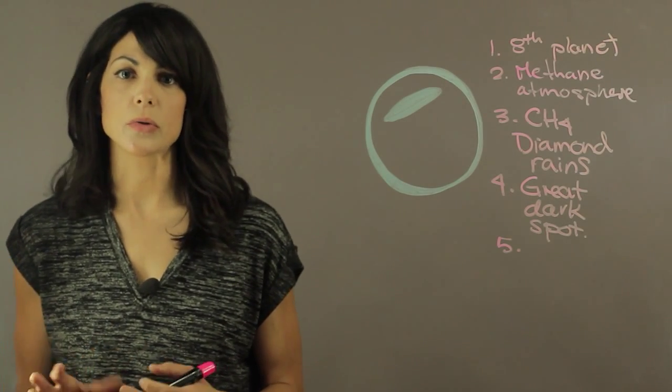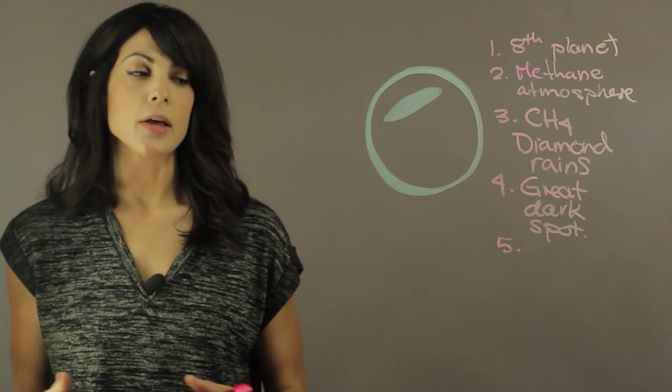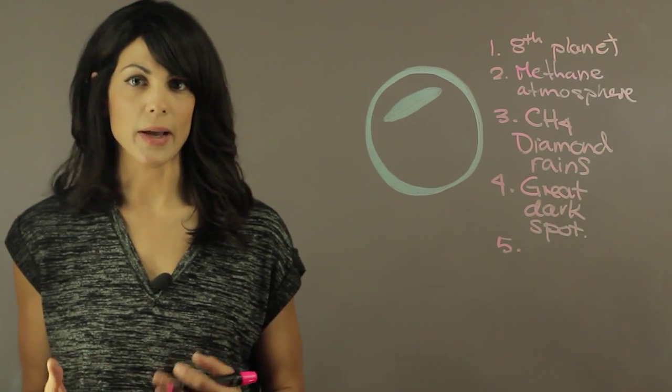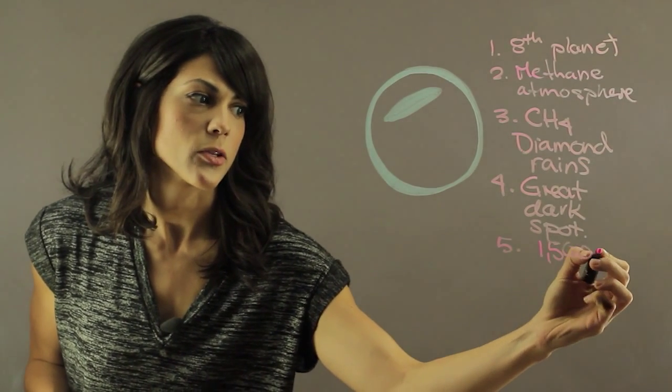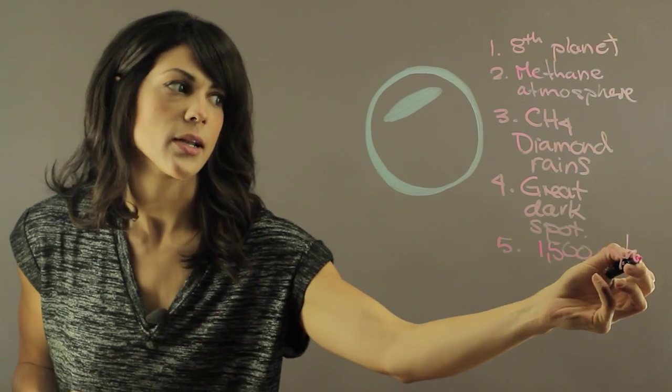So even Jupiter, whose storm is the most well-known, Neptune beats the wind speeds by a lot. The wind speeds in Neptune are about 1,500 miles per hour, and we haven't seen that anywhere else.